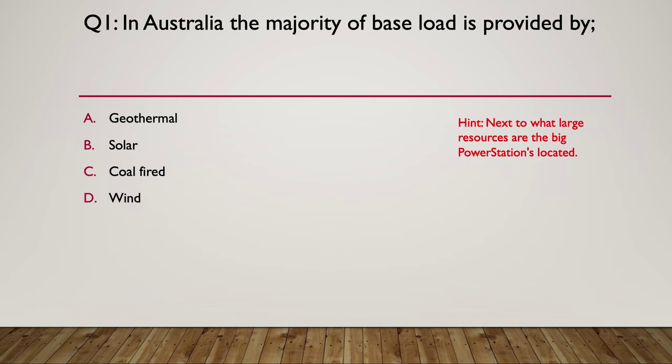The hint is next to what large resources are our big power stations located? Power stations like Liddell are next to a very common natural resource. So the answer here is coal-fired. All our baseload in Australia comes from coal-fired. We have less than 1% geothermal, about 3% solar and maybe 4% or 5% wind. And in Australia, there is no nuclear energy used to produce electrical power.